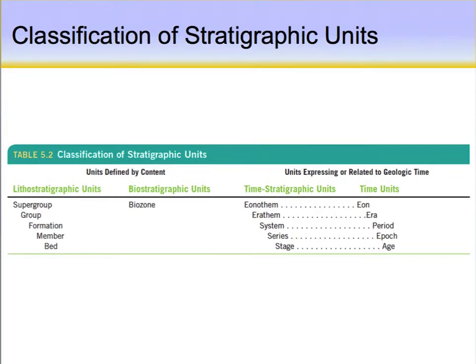Going back to some important classifications: for lithostratigraphic units, the base unit is the formation. Formations can be parts of groups — remember the Unkar Group or the Tonto Group in the Grand Canyon — and there can even be supergroups, which are even larger. Formations can also be broken down into members, and there could be individual beds, like a marker bed within those members. Lithostratigraphic units are solely based on rock type.